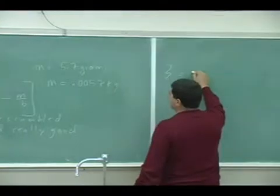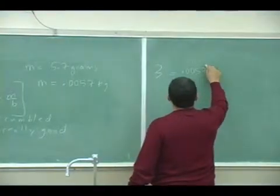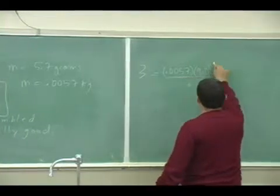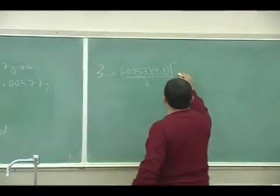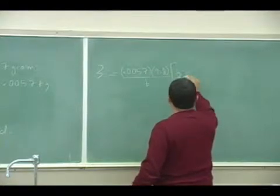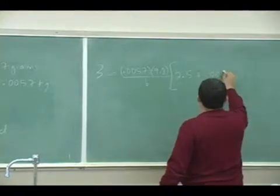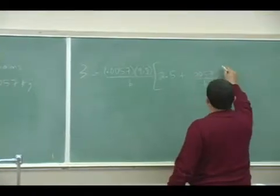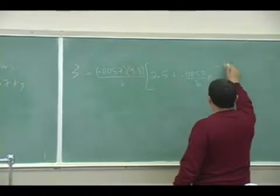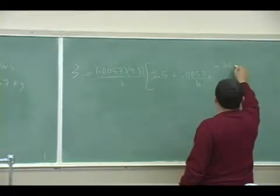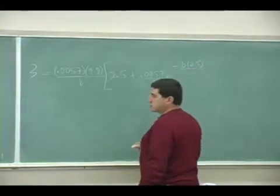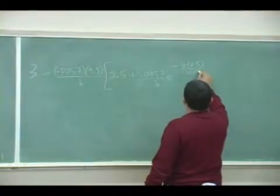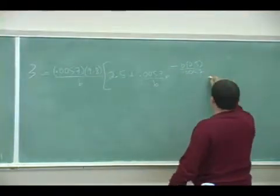So 3 is equal to 0.0057 times 9.8 over b, and then t is the time that it took two and a half seconds plus the mass 0.0057 over the b, e to the minus the b, which is still unknown, time is two and a half over the mass...